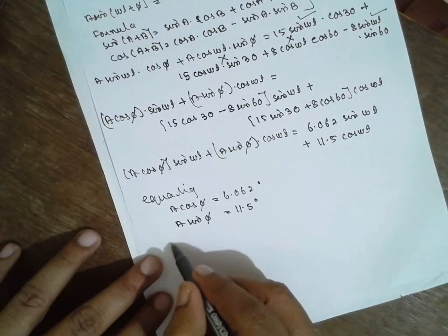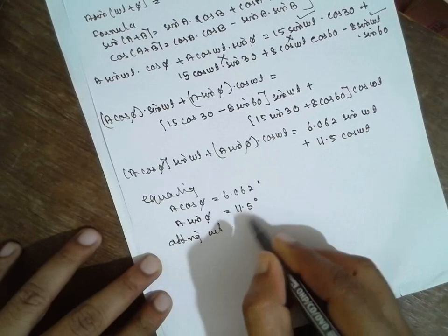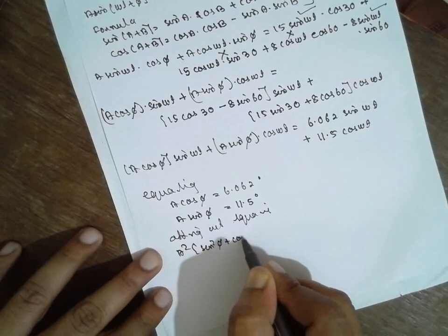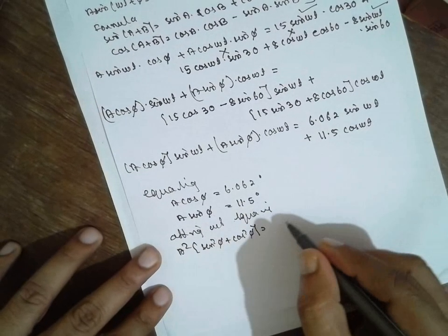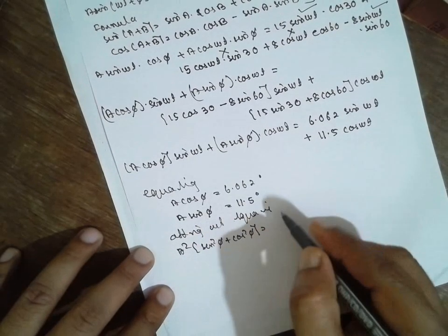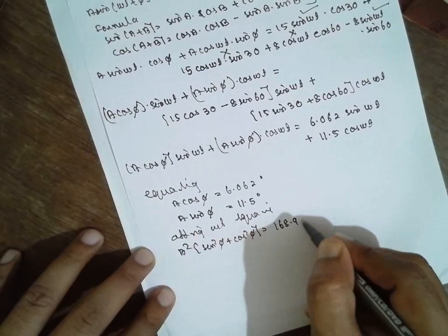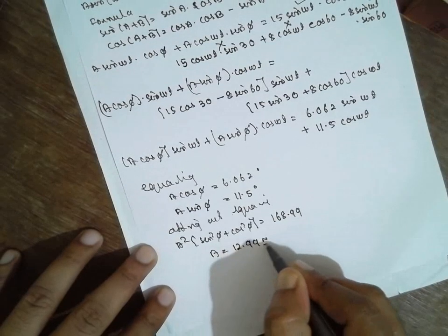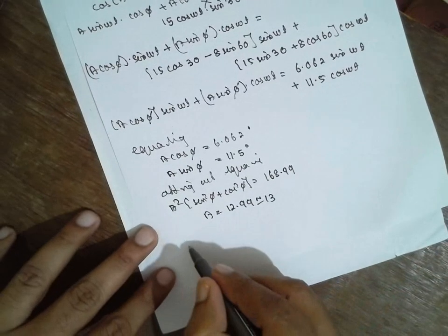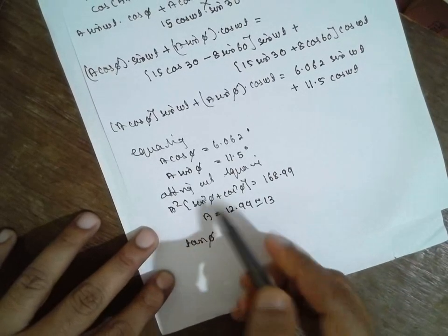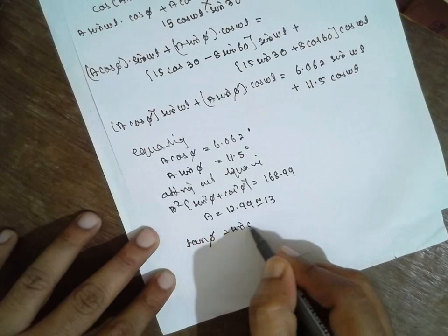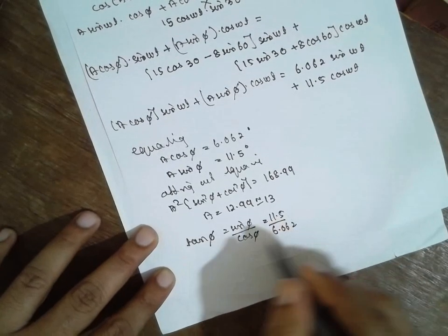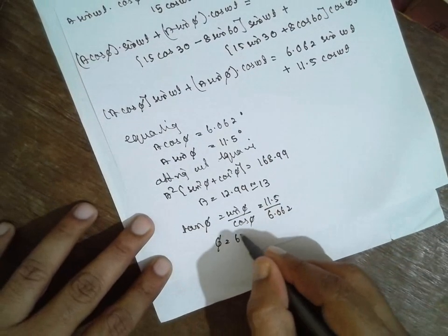Now, squaring and adding: A² (sin²φ + cos²φ) = 1, so squaring and adding the two terms gives 168.99, and the A value will be 12.99, approximately 13. For tan φ: tan φ = sin φ / cos φ = 11.5 / 6.062, so the angle φ will be 62.20°.